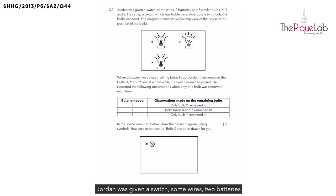Jordan was given a switch, some wires, two batteries and three similar bulbs X, Y and Z. He set up a circuit which was hidden in his shoebox leaving only the bulbs exposed.